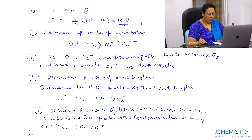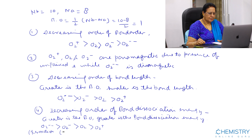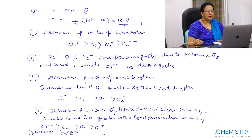O2(2-) is the peroxide ion. O2- is the superoxide ion. O2 is the oxygen molecule, and O2+ is the dioxygen cation or oxygen molecule ion.